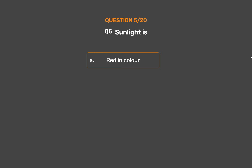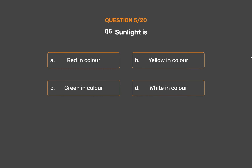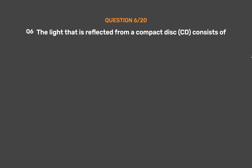Question number 5. Sunlight is: option A, red in color; option B, yellow in color; option C, green in color; option D, white in color. The correct answer is option D, white in color.